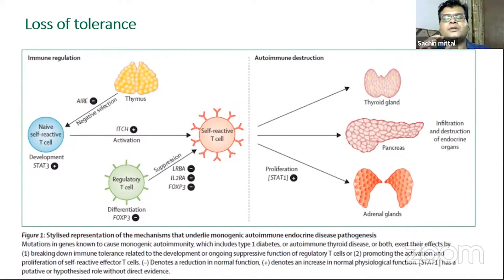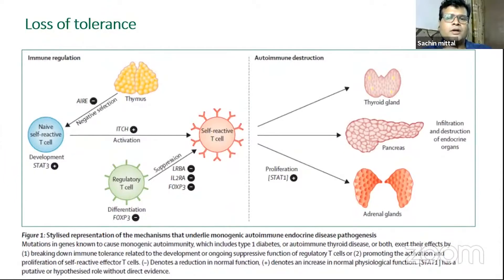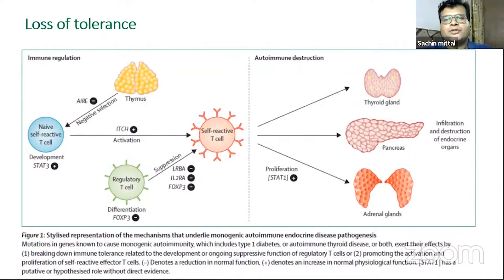Our body's immune system is trying to walk a tightrope, retaining the potential to mount an immune response against a pathogen while not acting against self-antigens. Through a complex process, loss of immune tolerance — which normally prevents T cells from creating a cascade of inflammatory cytokines leading to gland destruction — results in a dysregulation at that level, causing destruction, dysfunction, and eventually disease over a period of time.